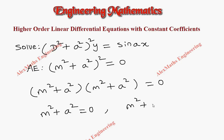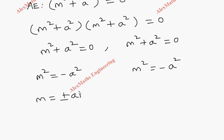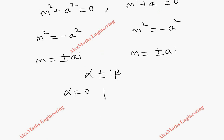From this, m² = −a², and even here m² = −a². So m = ±√(−a²) = ±ai. This is of the form alpha ± i·beta, where alpha = 0 and beta = a.